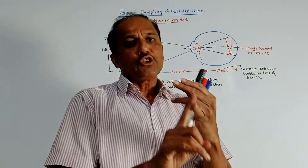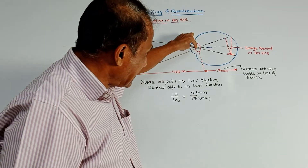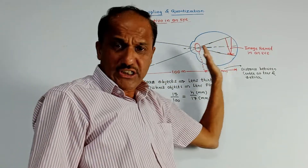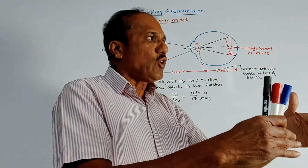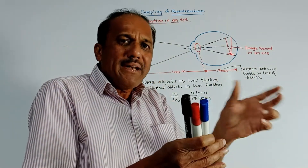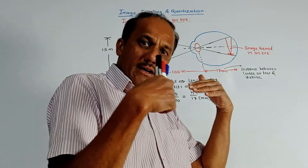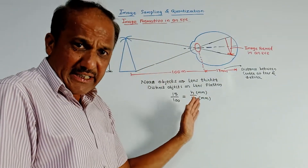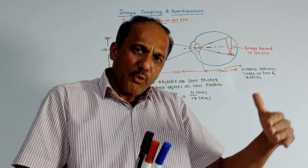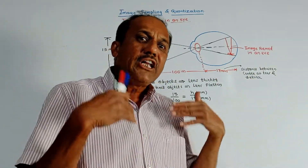In case of normal photography, we can change the distance between the lens and the image we want to capture. But in case of the human eye, that's not possible. As shown in this diagram, the distance between lens and retina is around 17 mm — this is fixed. To view nearby or distant objects, the lens is controlled: it can be made thicker or flatter. Once an image is captured by the eye, the corresponding sensation is given to the brain, which then decodes the image.